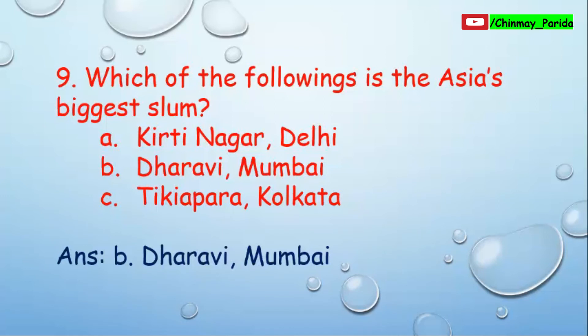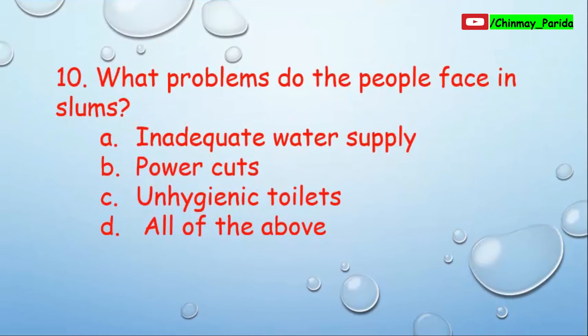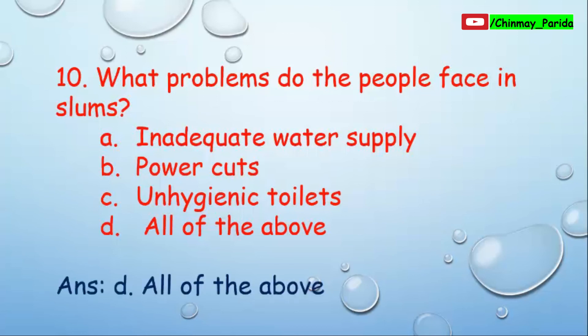Question number ten: What problems do people face in slum areas? Option A: inadequate water supply — correct. Option B: power cuts — yes, they face power cuts. Option C: unhygienic toilets — yes, the toilets in slums are very unhygienic. All three options are correct, so we choose option D: all of the above.